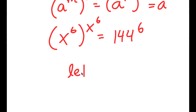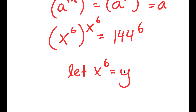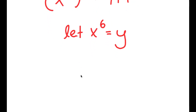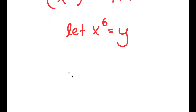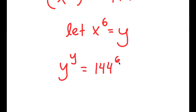Now I'm going to let x to the power of 6 equal to the variable y. Because we have x to the power of 6 appearing twice, I can substitute y in for x to the power of 6 into my equation. So I get y to the power of y is equal to 144 to the power of 6.